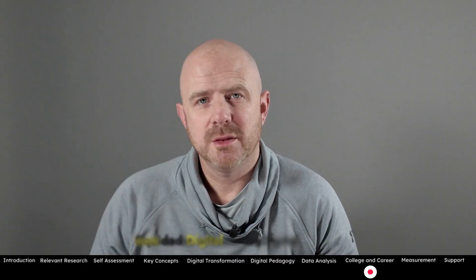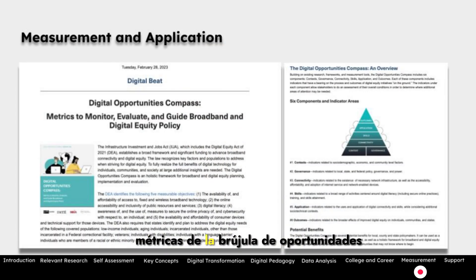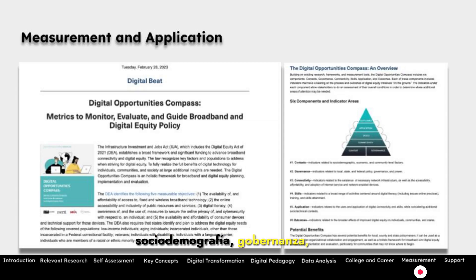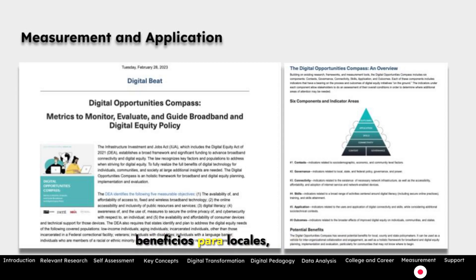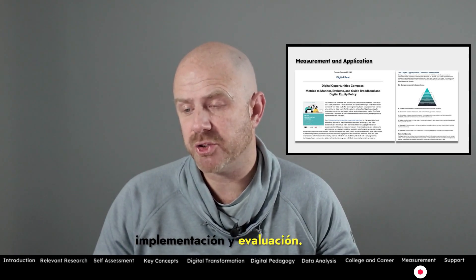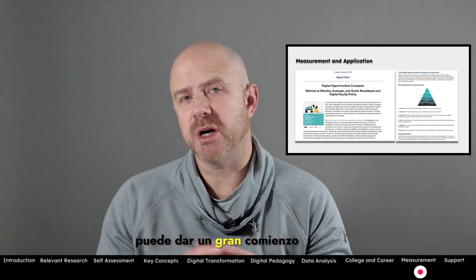Now let's talk about measurement and application with digital equity. This is an article from Digital Beat, February 28, 2023: 'Digital Opportunities Compass — Metrics to Monitor, Evaluate, and Guide Broadband and Digital Equity Policy.' They've developed an assessment tool for equity policy with six components and indicator areas: context, socio-demographics, governance, connectivity, skills, application, and outcomes. This tool is intended for local, county, and state policymakers as a vehicle for inter-organizational collaboration, and as a holistic framework for broadband and digital equity planning, implementation, and evaluation — particularly for communities that may not know where to begin. By defining five specific measurable objectives, it provides a great starting place to begin measuring your digital equity.